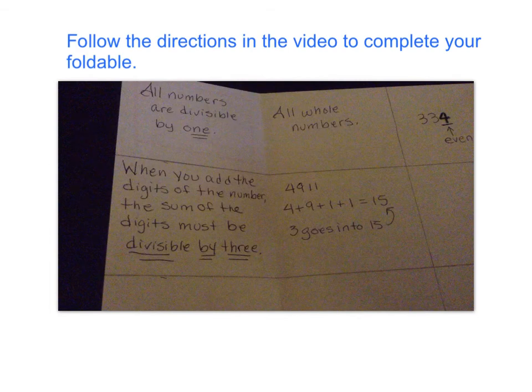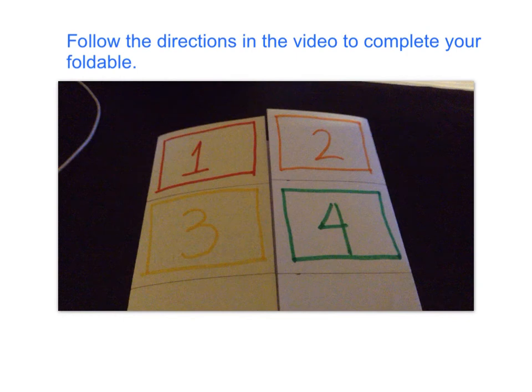We're going to move on to 4 on the right-hand side. Behind number 4, we write the last two digits of the number must be divisible by 4. Your example is 876,712. I've bolded the 12, so you can do that too, and underline it and write divisible by 4.